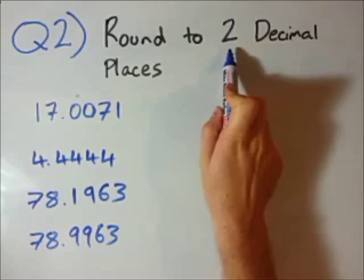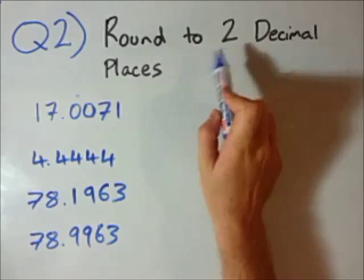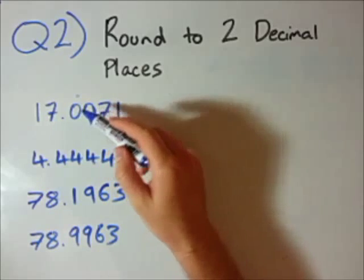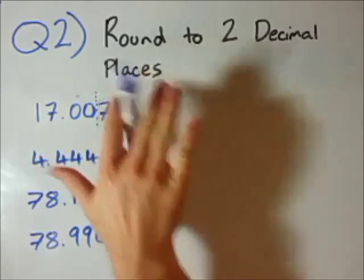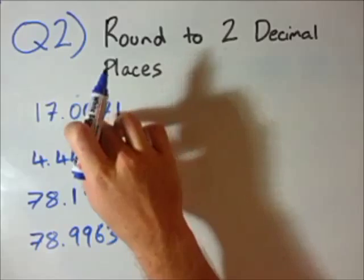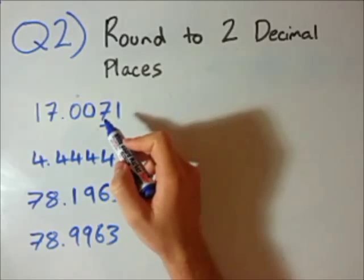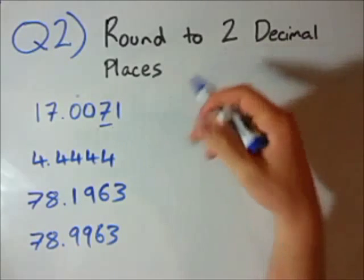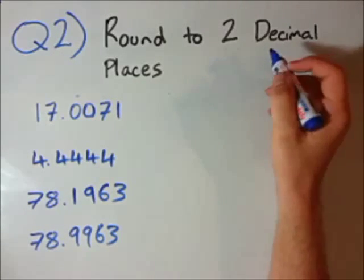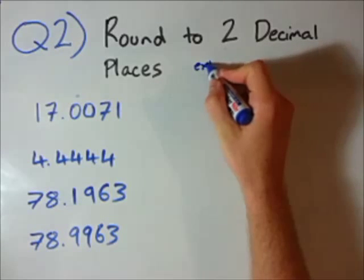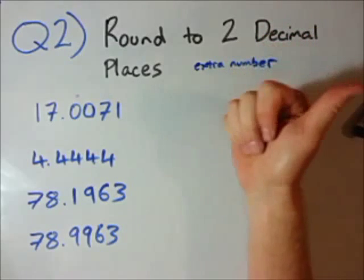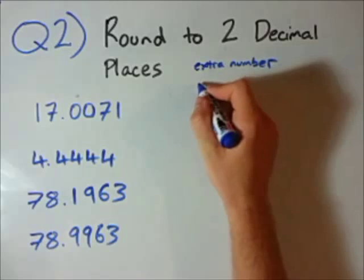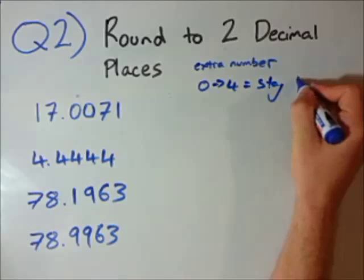In this question, we're asked to round to two decimal places. What this means is I want to shorten the number to two numbers after the decimal point. If you're rounding to two decimal places, you consider the third number after the decimal point. If you're rounding to three decimal places, you consider the fourth number after the decimal point. This extra number — if it is 0, 1, 2, 3, or 4, you leave the last number the same: 0 to 4, stay the same.